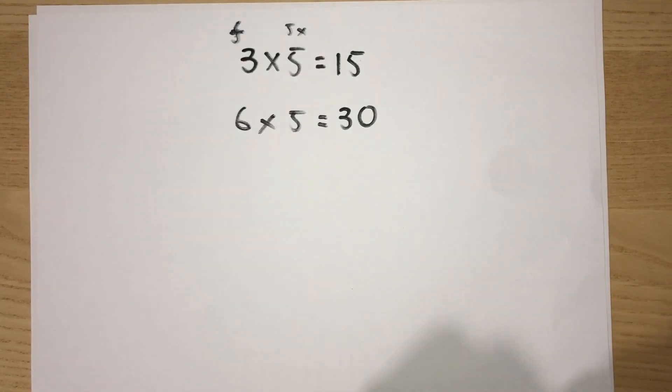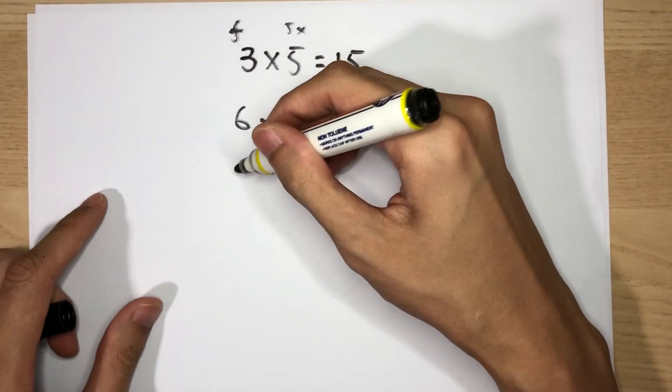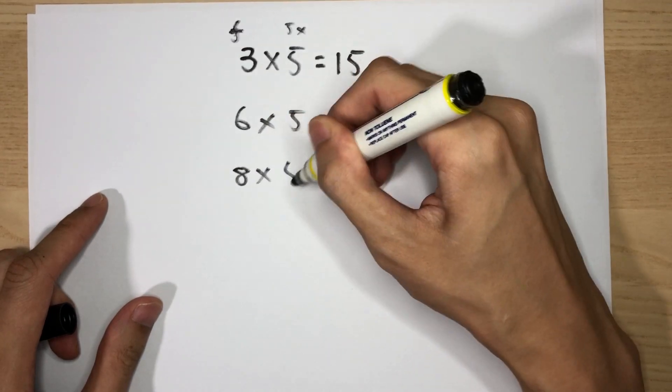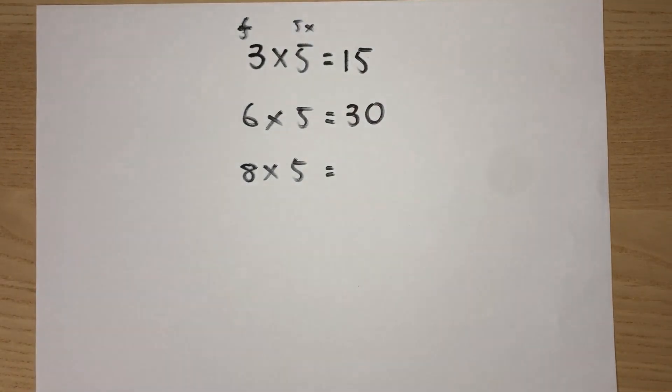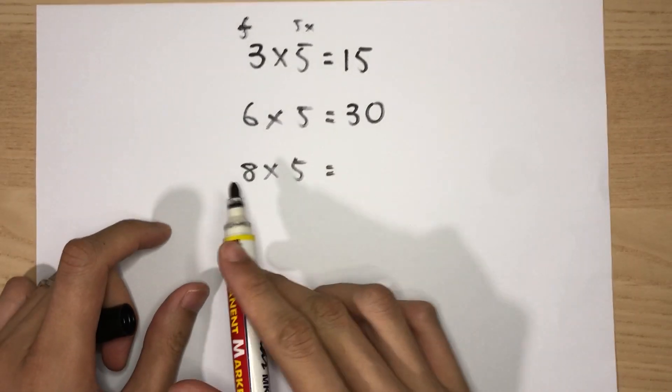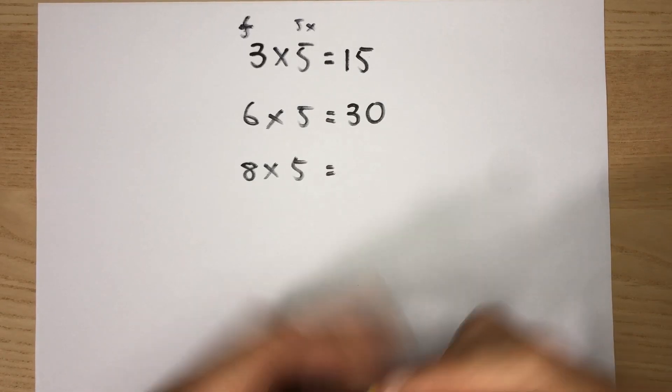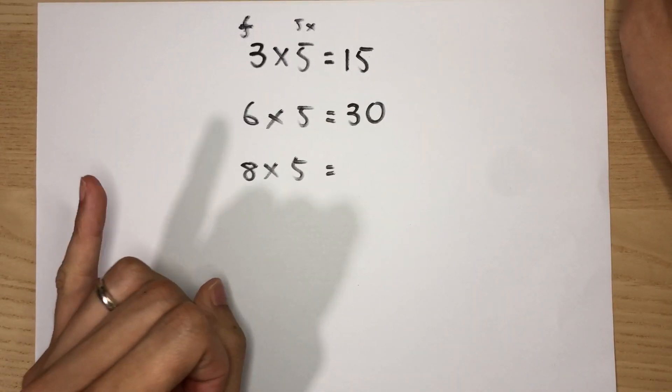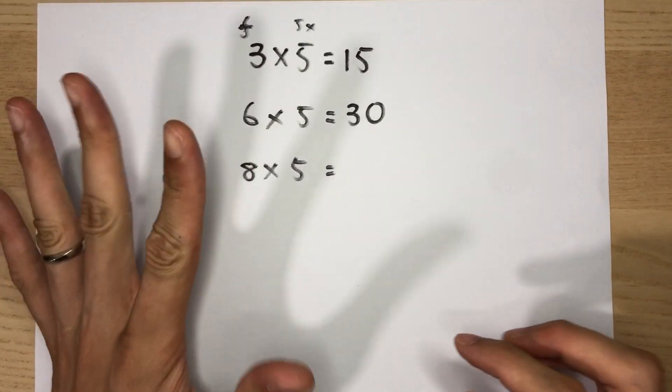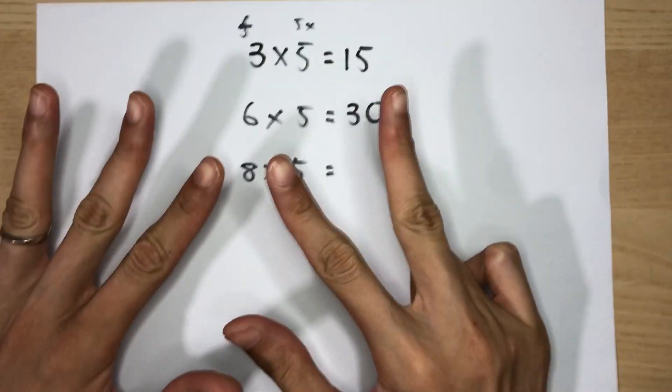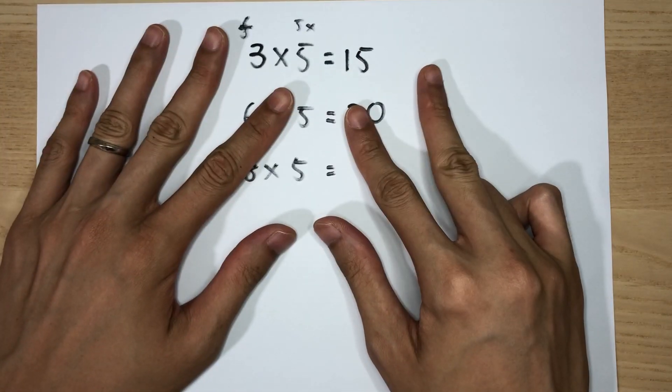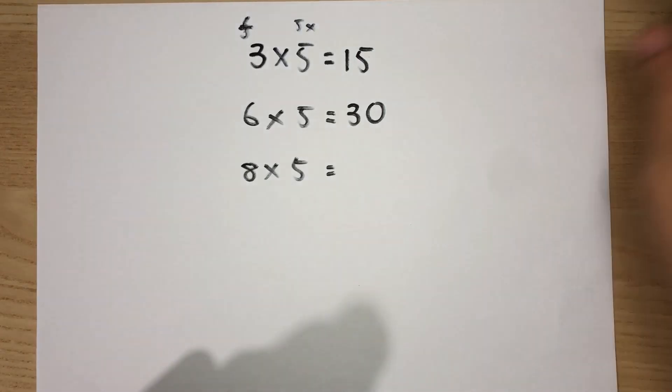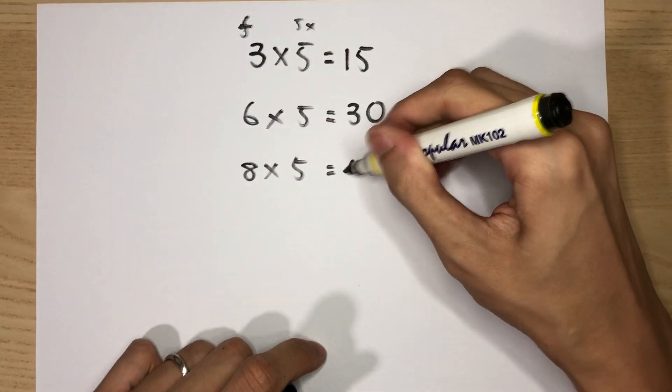Next one. Try it on your own. 8 times 5. Go. Hopefully, you got the answer now. Let's do it together. 5, 10, 15, 20, 25, 30, 35, 40. I have 8 fingers out, and the answer is 40.